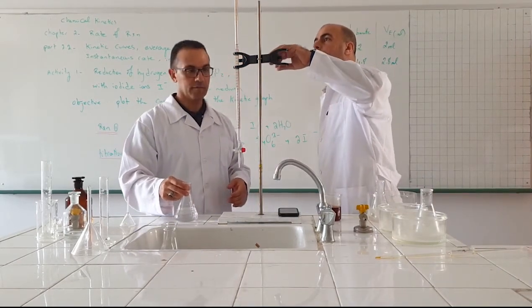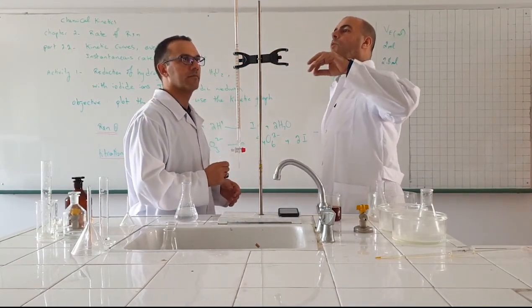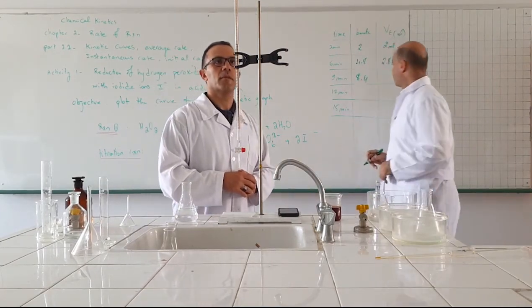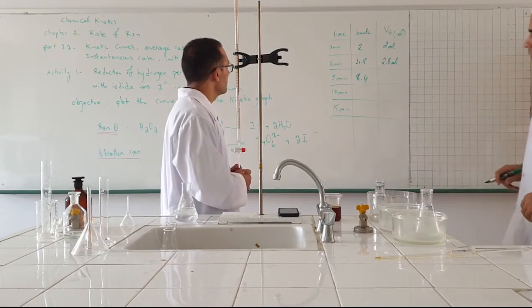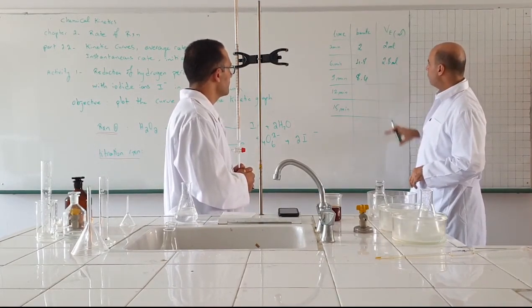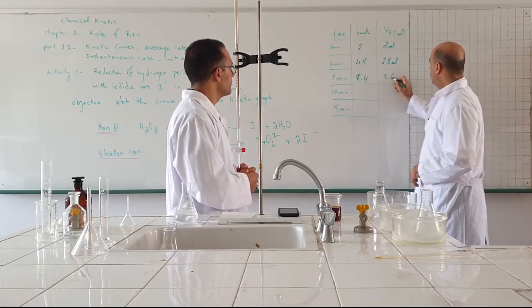After 9 minutes. Okay. The reading of the burette is 8.4. So, the volume at equivalence point is 8.4 minus 4.8, 3.6.